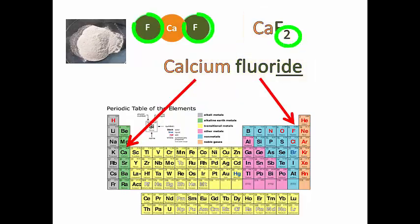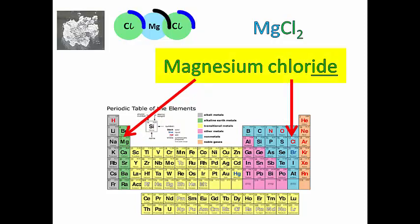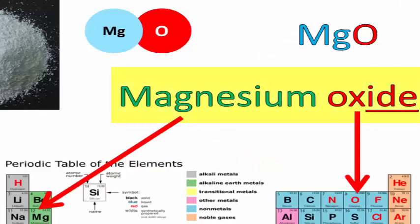Again, that little two means that there are two Fs for every one Ca. Magnesium chloride. MgCl2. Magnesium oxide. MgO.